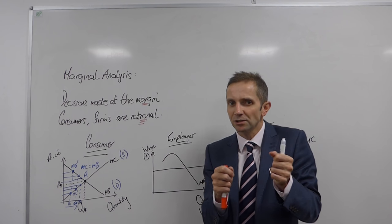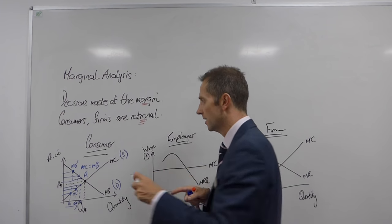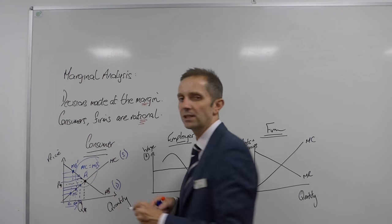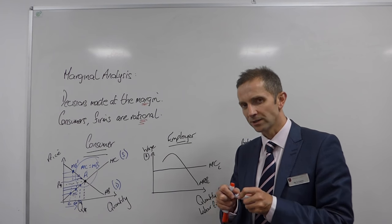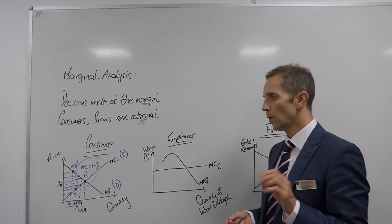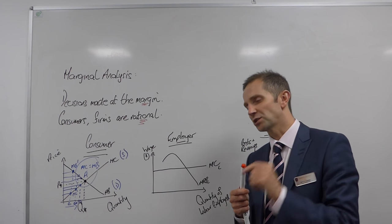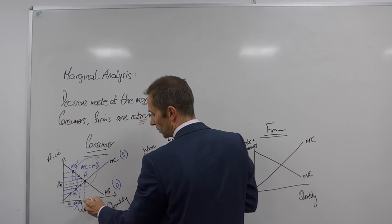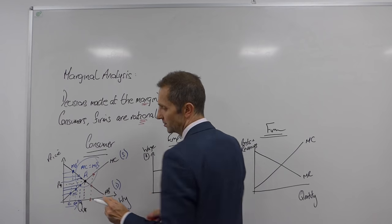Now we say that the rational individual will consume right up to and including the point at which marginal cost equals marginal benefit. This is something that you'll look at a lot, especially in year two economics when you look at market structure. Now what about consuming beyond Q2? Why would that not be a rational decision for the consumer? Well, I think it's obvious, isn't it?